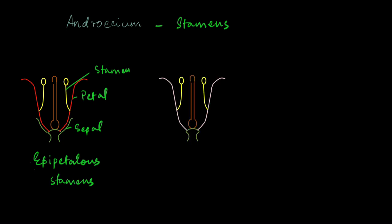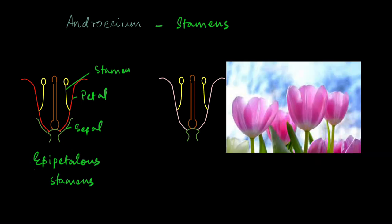In other flowers, the stamens are attached to the perianth. What is the perianth? In some flowers like tulips, the pink colored ones you see here are actually not petals. We don't call them petals because there is no separate petal and sepal in these flowers. There are no green sepals at the base of the flower as you would expect. So there are no sepals, there are no petals — there is just one thing instead of the two of them, and those are called tepals.